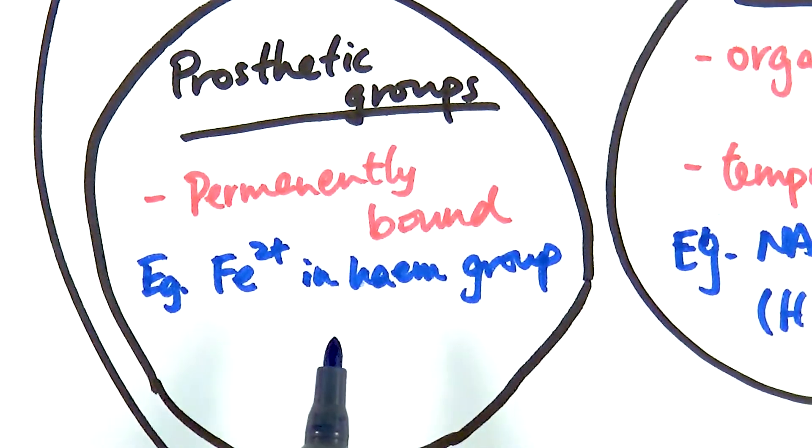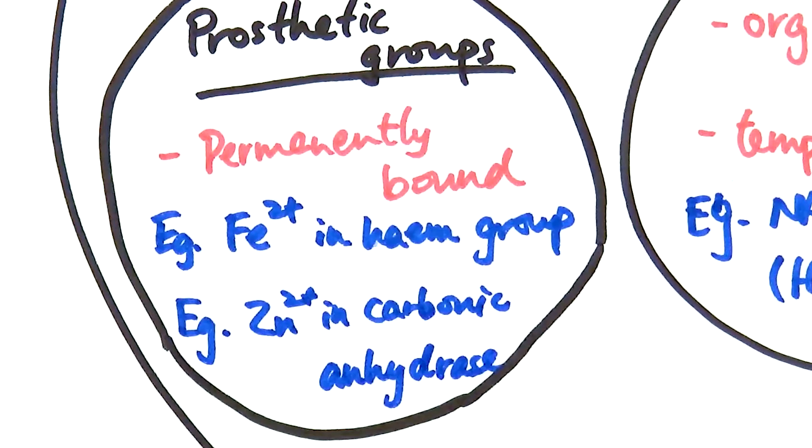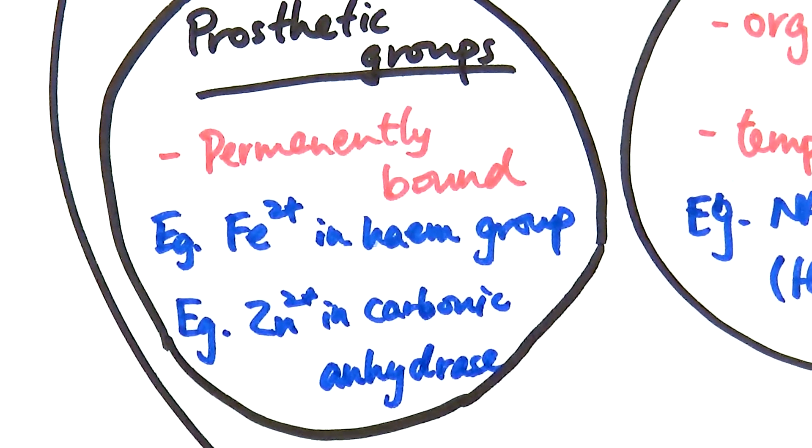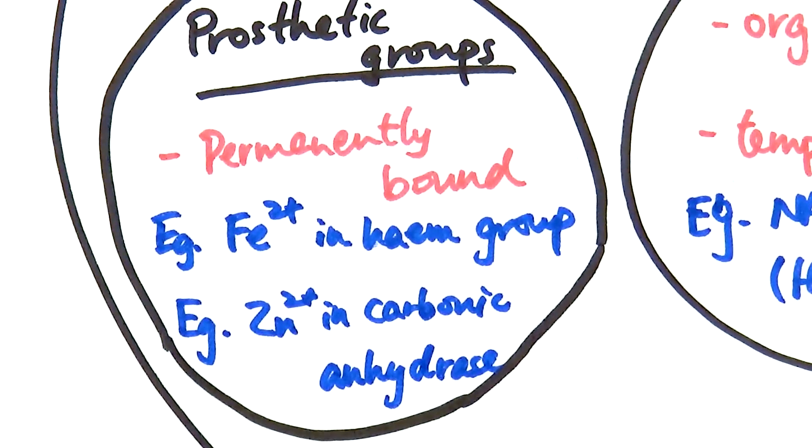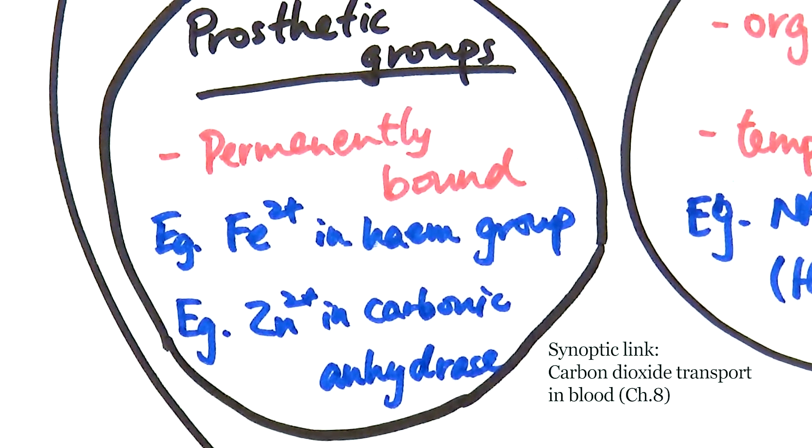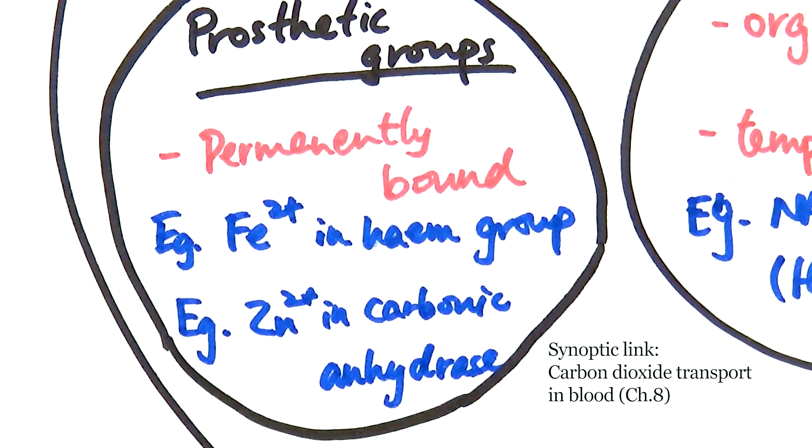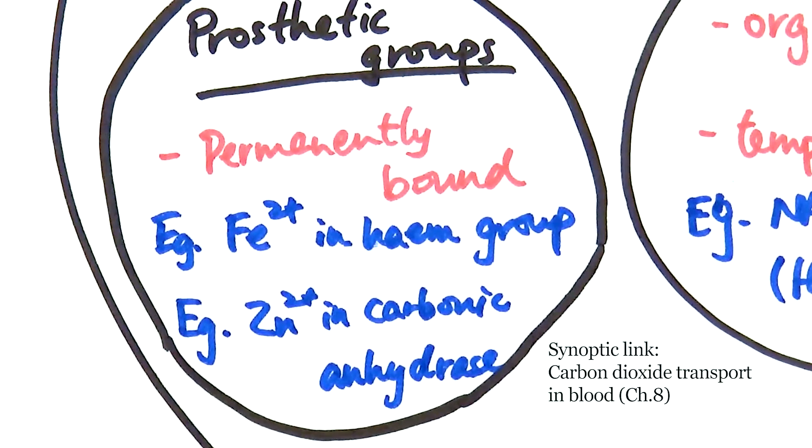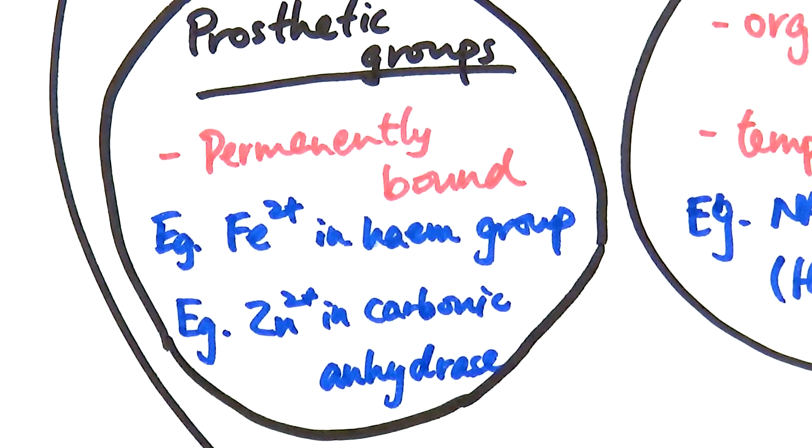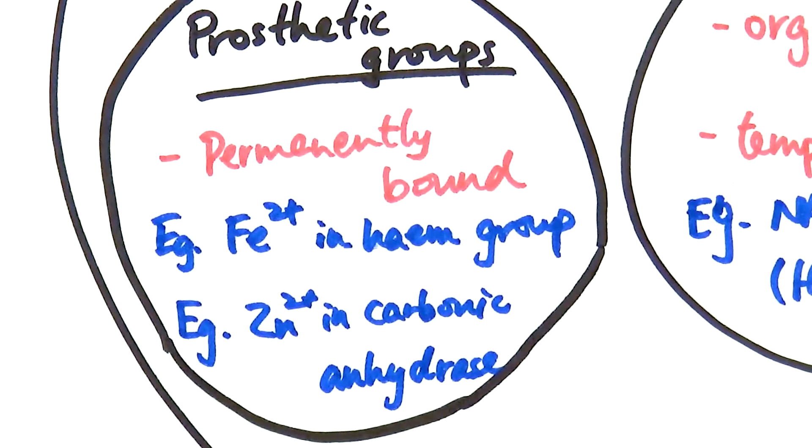They are involved in the transport of oxygen. Another example that you need to be aware of now is that there are zinc ions inside an enzyme called carbonic anhydrase. You will come across this enzyme again when you go into chapter eight about transport in animals, specifically about the transport of carbon dioxide in blood. Carbonic anhydrase is an essential enzyme in the red blood cell that actually helps in that particular process. And again, without the zinc ion actually bound inside the carbonic anhydrase, they wouldn't be able to work.